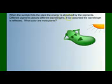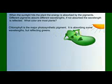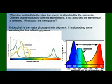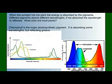When sunlight hits plants, the energy of light is absorbed by the different pigments in the plant. Different pigments will absorb different wavelengths, or different energies, of light. If a wavelength is not absorbed, it is reflected. Most plants are green because chlorophyll is the major photosynthetic pigment — it absorbs some wavelengths but reflects the green. Looking at the absorption graphs for the major photopigments found in plants — chlorophyll A, chlorophyll B, and the carotenoids — chlorophyll absorbs the blues, violets, reds, and oranges, but reflects a lot of the green. That's why plants look green.